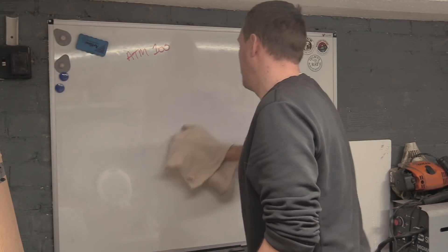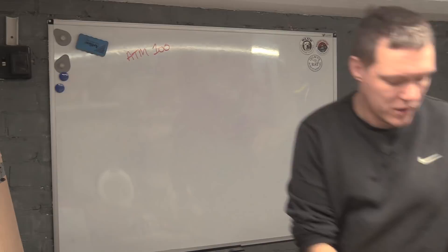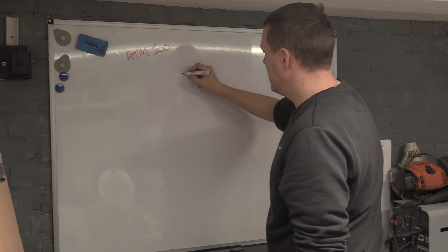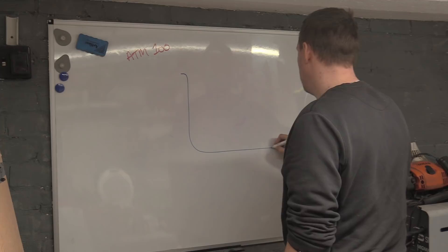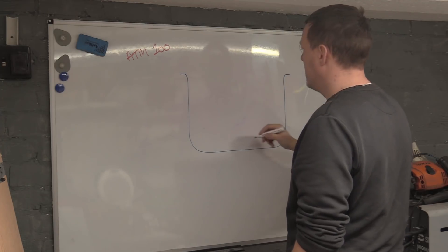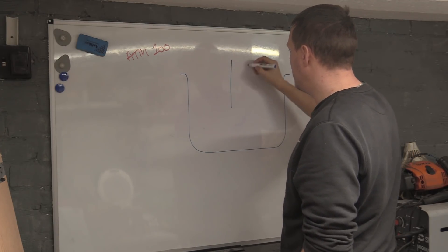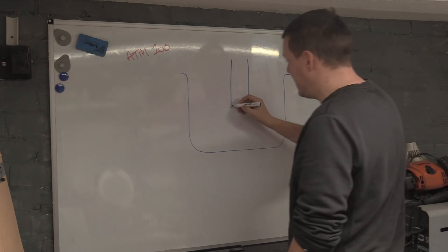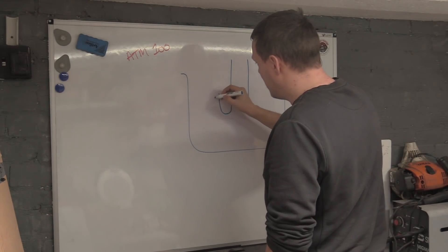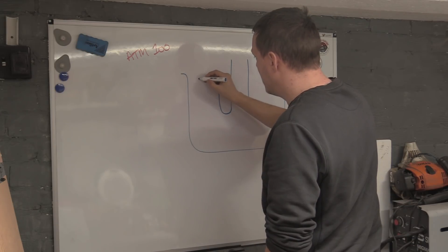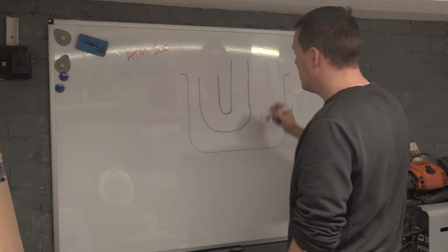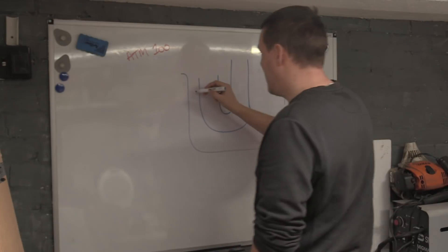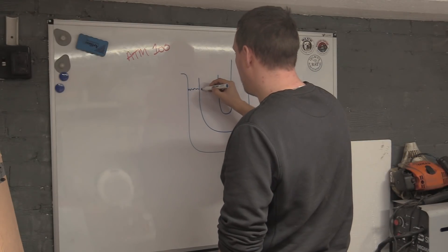If we look at a carb, what we've got is we have a fuel bowl in our carb, and then we have this jet like this. Now to make this even easier to understand, we're going to do this. So there's our tube from before. And let's just say our fuel level is here like this.